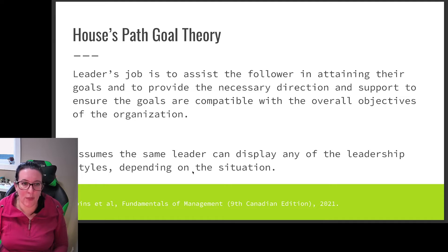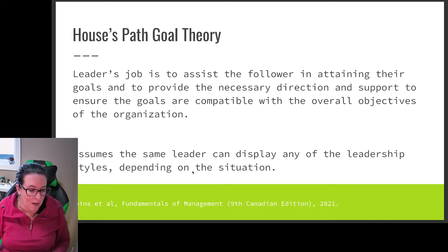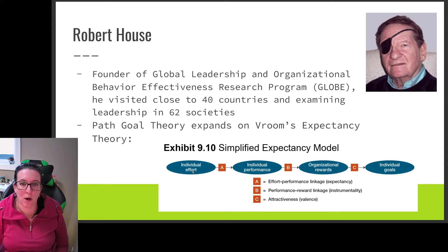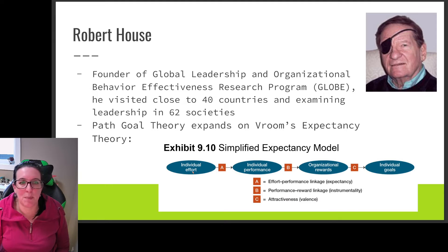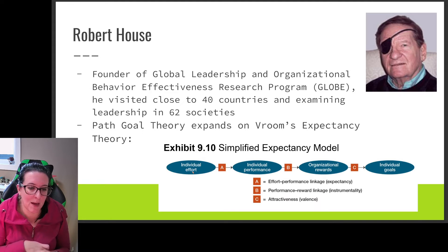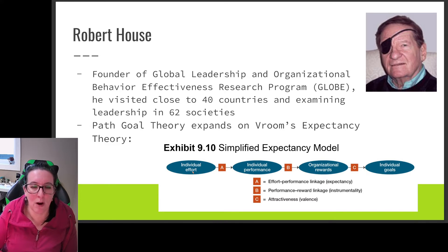The House path-goal theory assumes that the same leader can display different leadership styles depending on the situation. This theory comes from Robert House, founder of the Global Leadership and Organizational Behavior Effectiveness Research Program — GLOBE. We'll come back to GLOBE in later videos. House looked at leadership in 62 different societies across 40 countries, examining how we lead in different cultures and organizations around the world, which we'll revisit when we get to cross-cultural leadership and leading a diverse workforce.